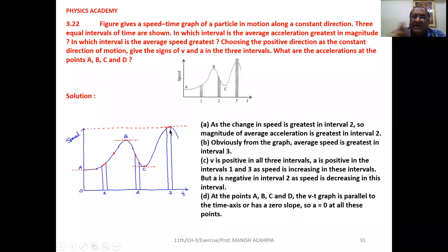But points A, B, C, and D are such that if you draw the tangents at all these points, the tangents will be parallel to the time axis. So the slope of each tangent drawn at A, B, C, D will be equal to zero, and therefore acceleration is zero at A, B, C, and D.